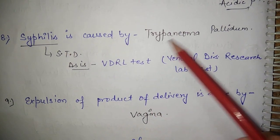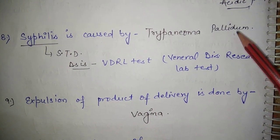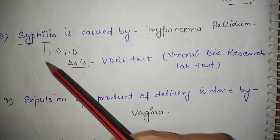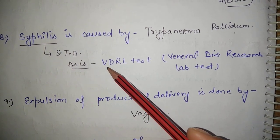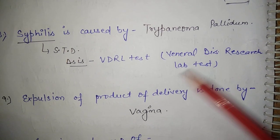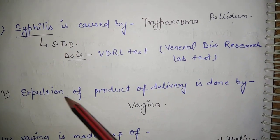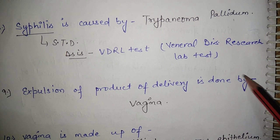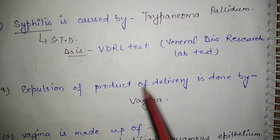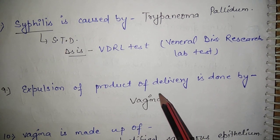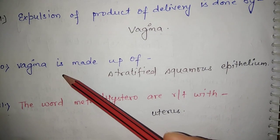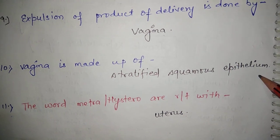Syphilis is caused by Treponema pallidum. It is a sexually transmitted disease, and the diagnostic test for syphilis is VDRL — Venereal Disease Research Laboratory test. Expulsion of the product of delivery is done by the vagina, and the expulsion of the product of the menstrual cycle is also done by vagina.